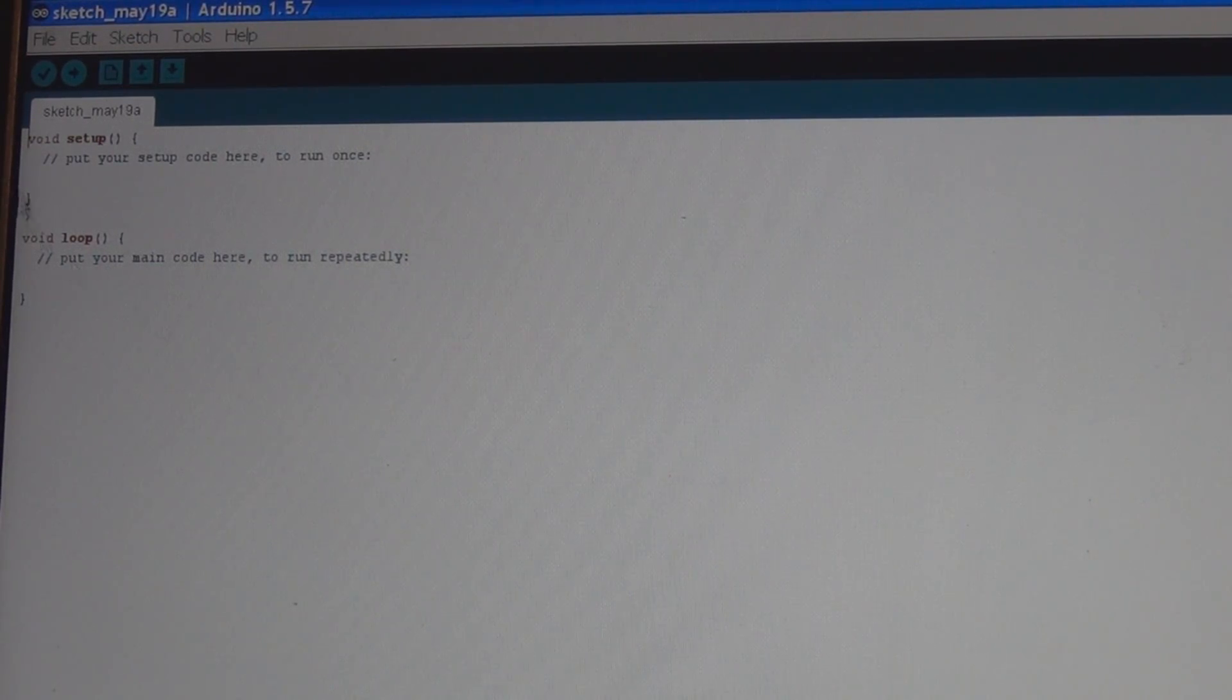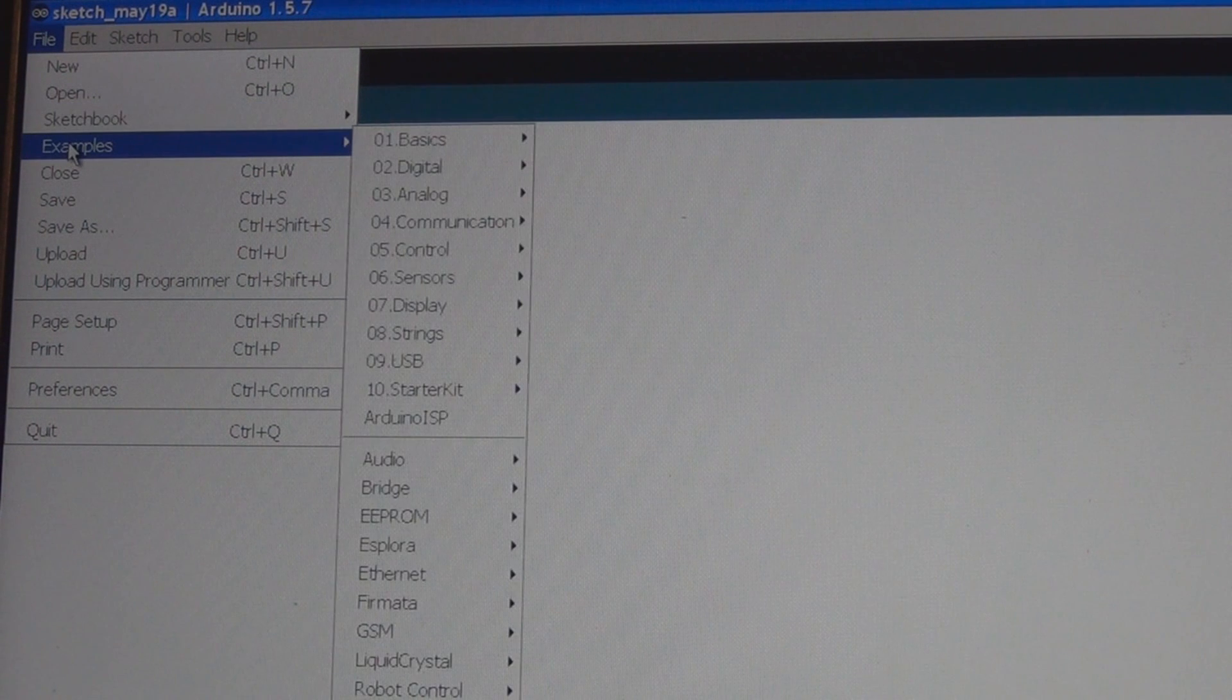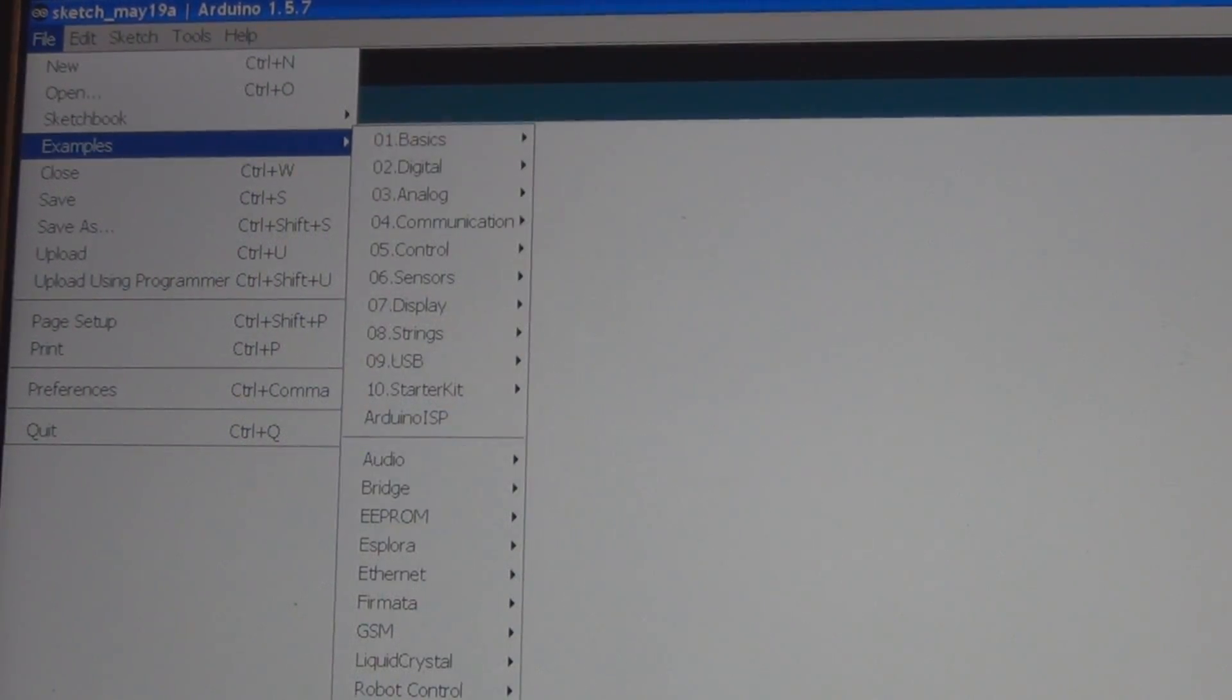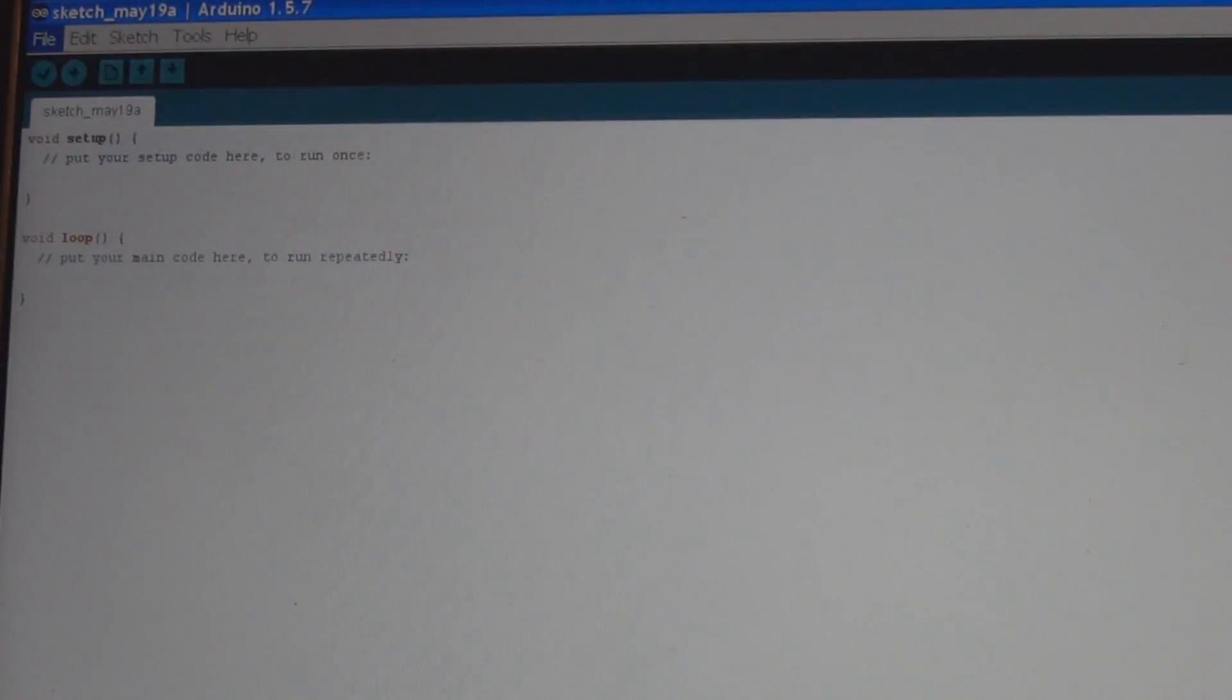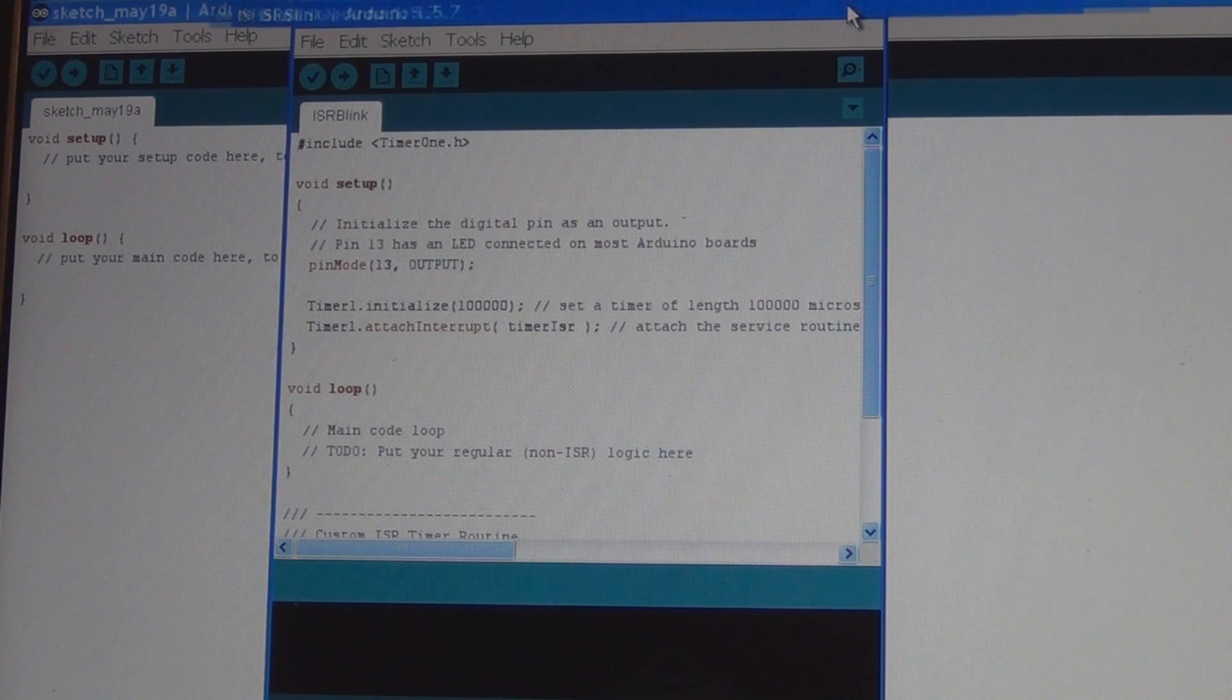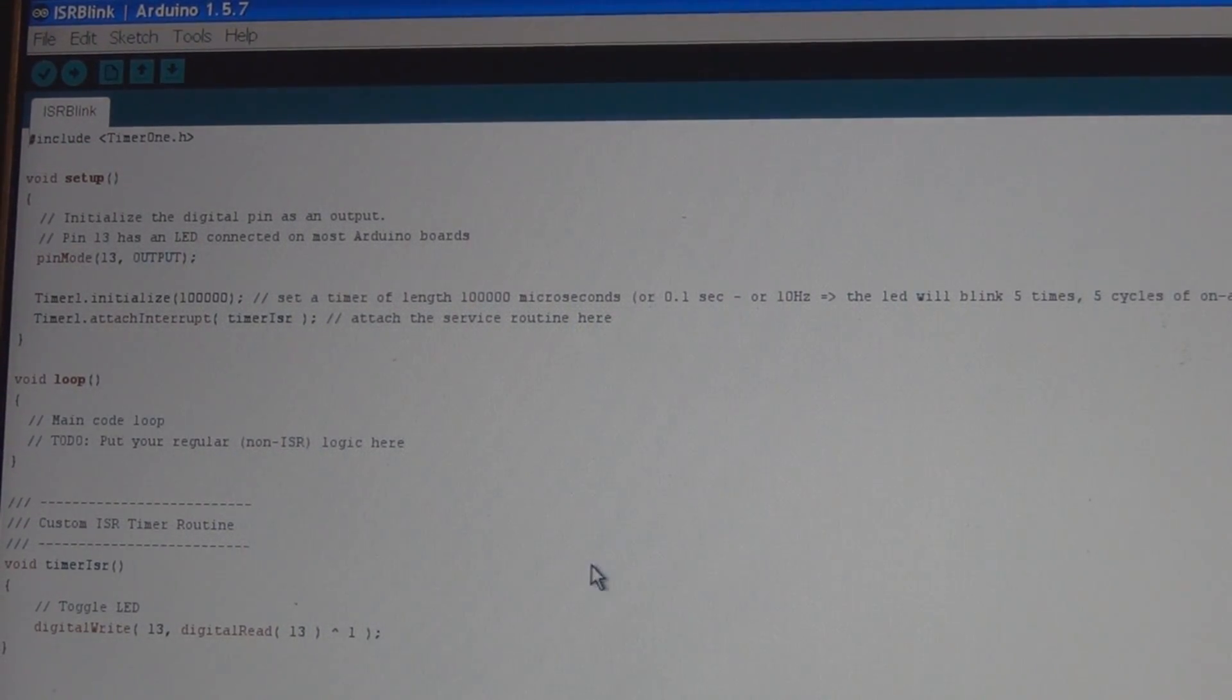So you need to install it here. You can see Timer One. If you have the Timer One library installed correctly, if you go to files and examples at the end here, there's a Timer One ISR blank sketch. This is just a short sketch that will toggle the surface mount LED on the Arduino that's connected to pin 13. It'll toggle it on and off at 10 Hertz, so it will be on five times and off five times in a one-second interval.